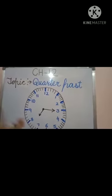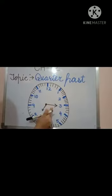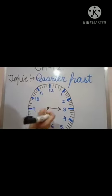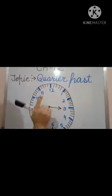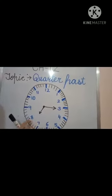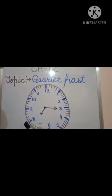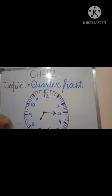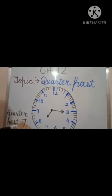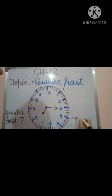We can also write the time based on where the long hand points. The long hand is at three, and we all know that when the long hand is at three, 15 minutes have passed. The short hand is between 7 and 8, so we write the first number first. We write: quarter past 7, or 7:15.